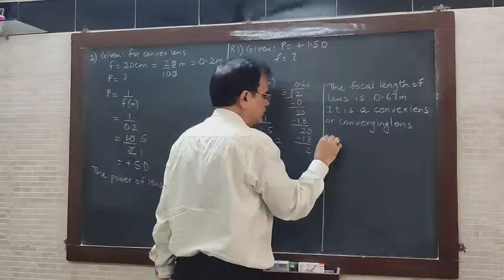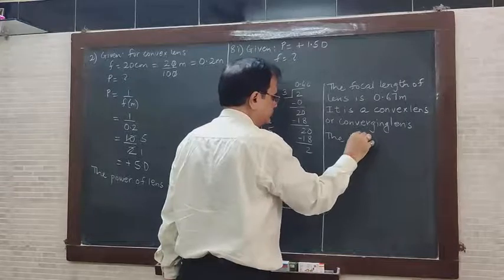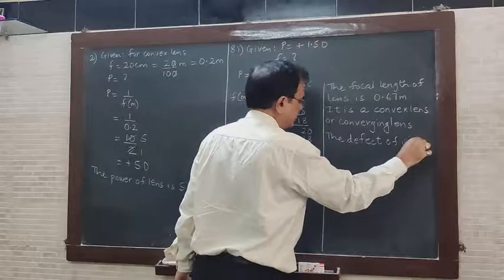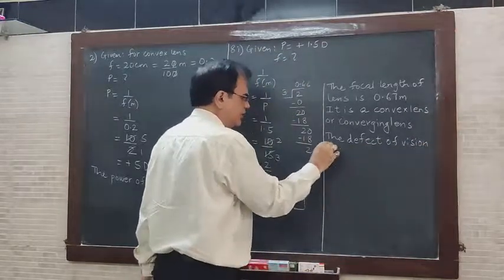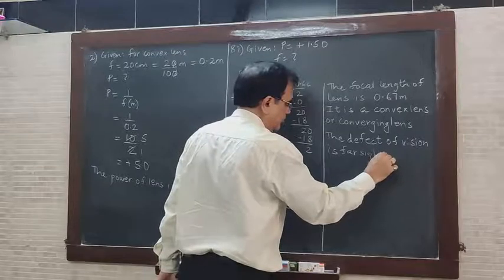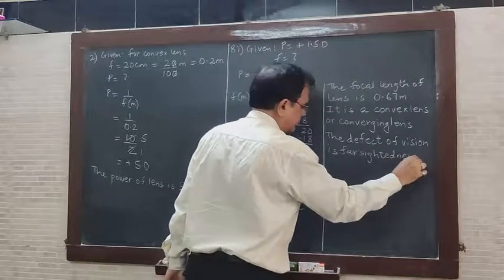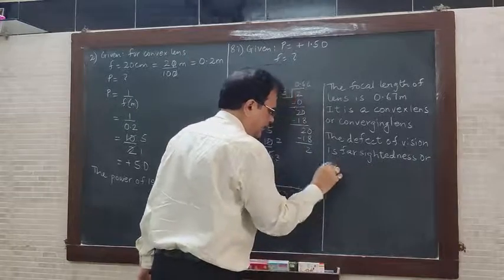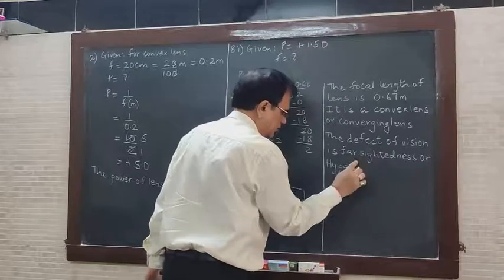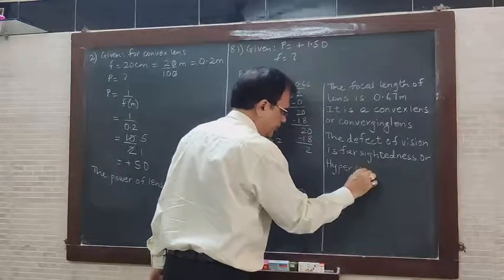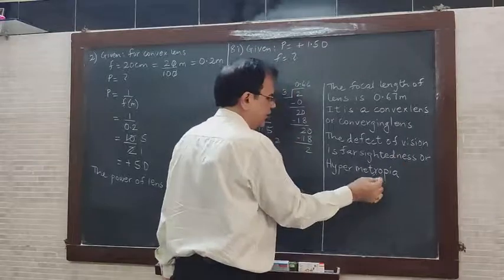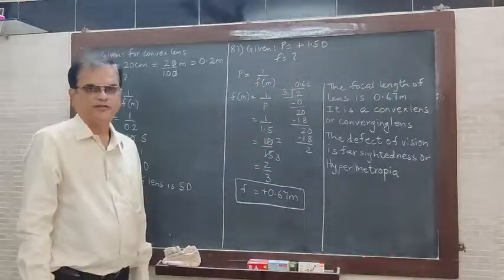The defect of vision: a convex lens is used to cure farsightedness, or hypermetropia. So the defect of vision is farsightedness or hypermetropia. This is the final answer.